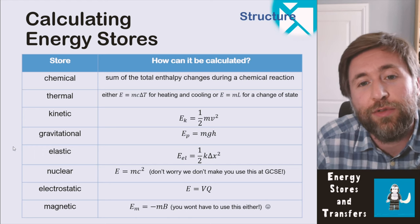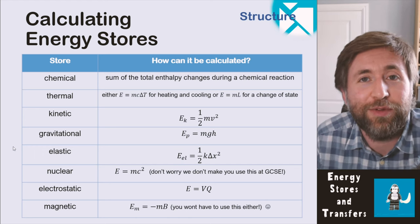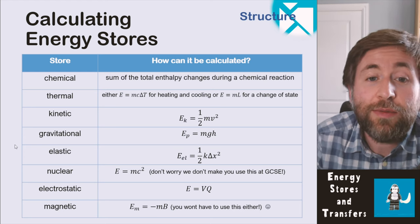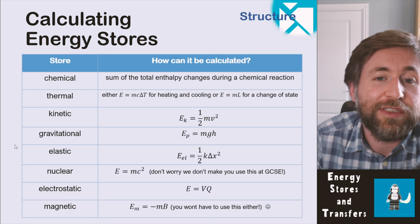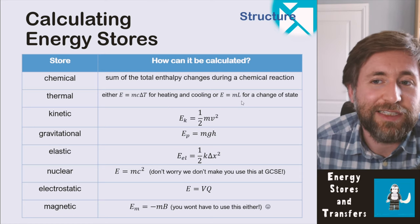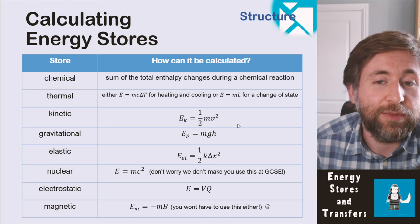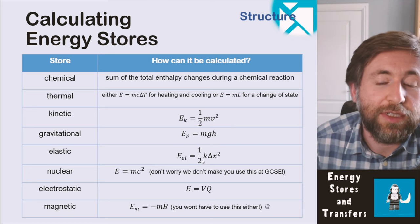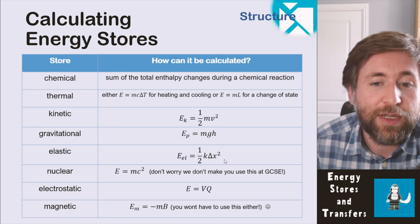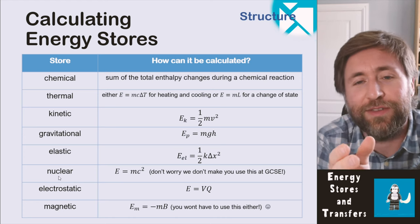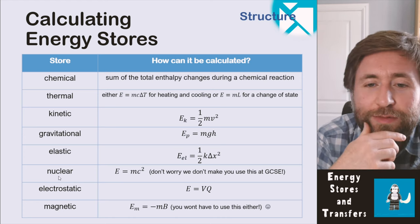There is a way to calculate a chemical store — it's the sum of the total entropy changes during a chemical reaction — but that's for chemistry GCSE. For a thermal store: energy = mass × specific heat capacity × temperature change (for heating/cooling), or energy = mass × specific latent heat (for a change of state). Kinetic energy = ½ × mass × speed². Gravitational potential = mass × g × height. Elastic potential = ½ × spring constant × extension². E = mc² calculates a nuclear store, but that's A-level, not GCSE.